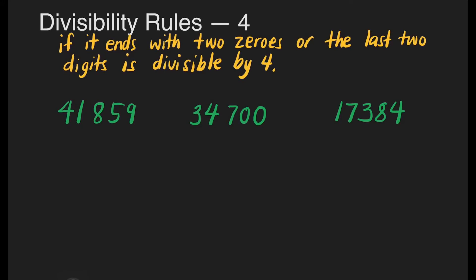Let us check if the first number, 41,859, is divisible by 4. By checking the last 2 digits, we have 59. Let us divide: 59 divided by 4. How many 4s are there in 5? That's 1. 1 times 4 is 4. Subtract: 5 minus 4 is 1. Bring down 9. How many 4s are there in 19? That's 4. 4 times 4 is 16. 19 minus 16 is 3. We have a remainder of 3.